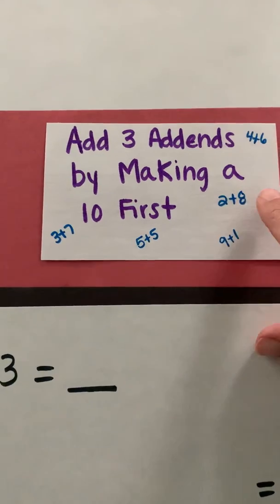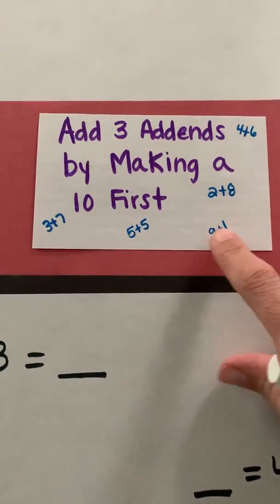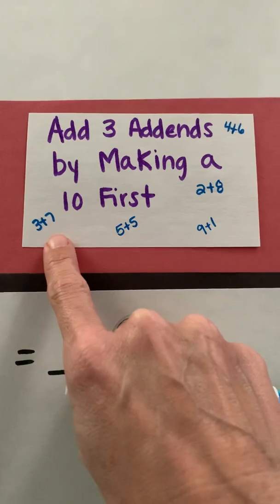realized that four plus six will make 10, two plus eight, nine plus one, five plus five, and three plus seven.